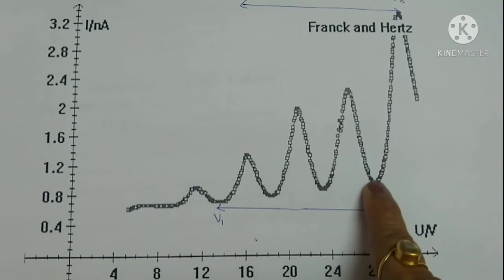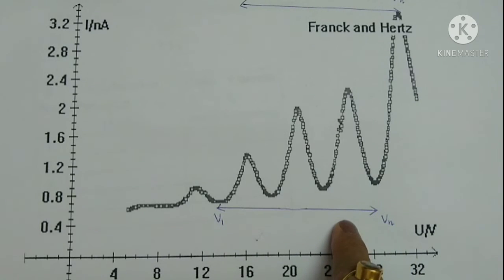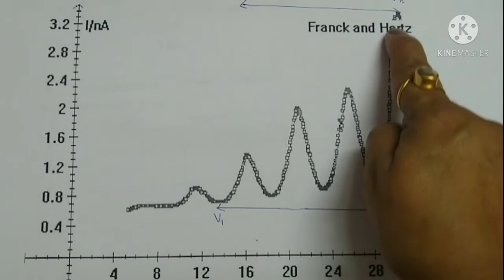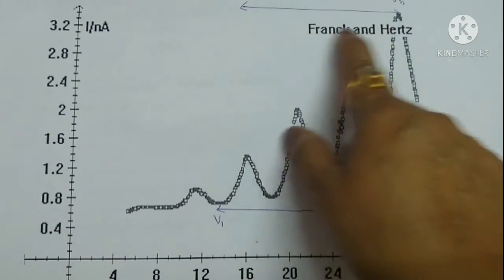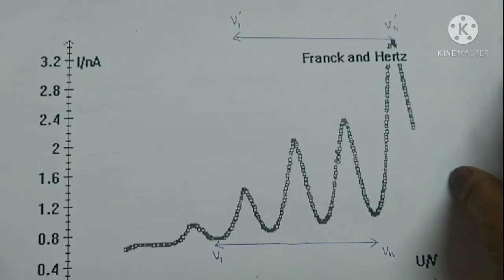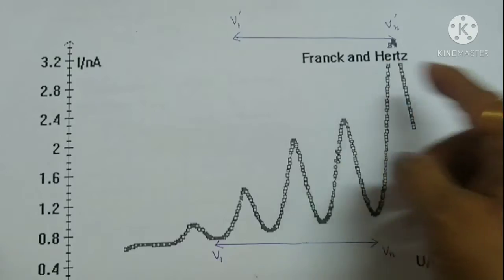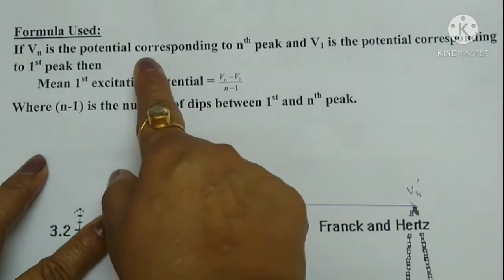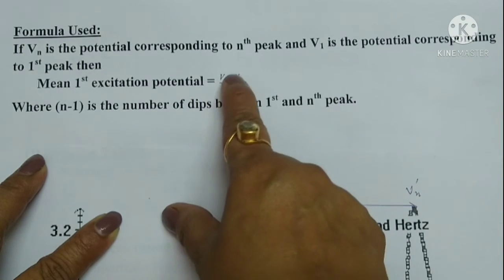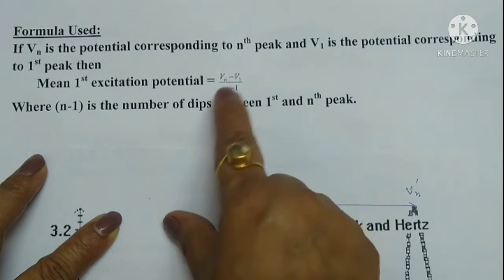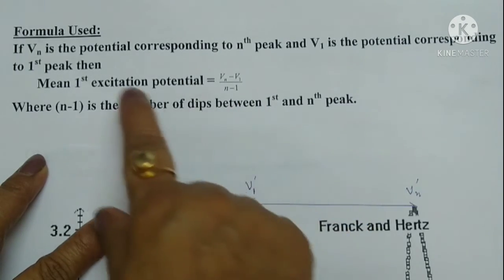To minimize the error, we take the difference between the nth minima and first minima, and then divide it by the number of dips. Similarly, we can take the difference between the nth maxima and first maxima and divide it by the number of maximas in that interval. The formula used is: if Vn is the potential corresponding to nth peak and V1 is the potential due to first peak, then the excitation potential is (Vn - V1) / (n - 1).